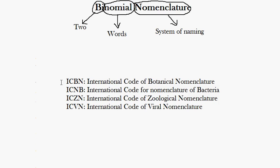The next group was ICNB, the International Code for Nomenclature of Bacteria, which dealt with the nomenclature of bacteria. After that came ICZN, the International Code for Zoological Nomenclature, dealing with the nomenclature of animals. Another group is ICVN, the International Code for Viral Nomenclature.